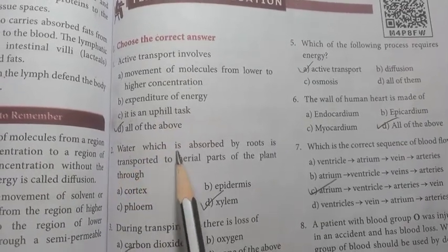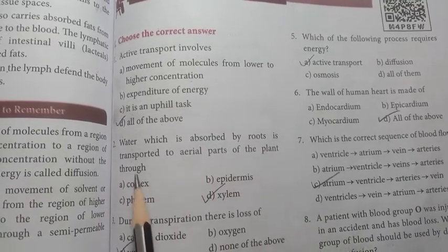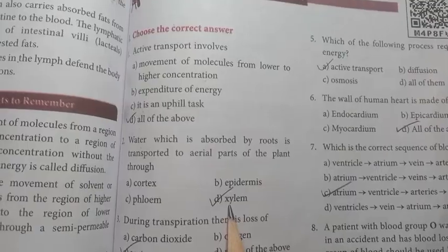Second: water which is absorbed by roots is transported to aerial parts of the plant through xylem. Answer is D option, xylem.